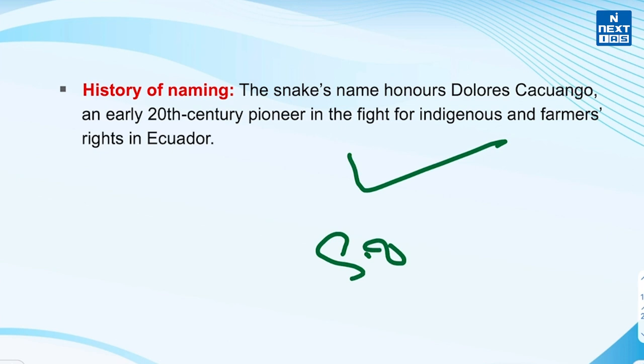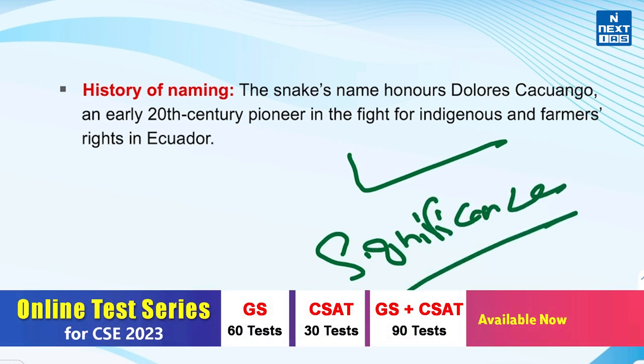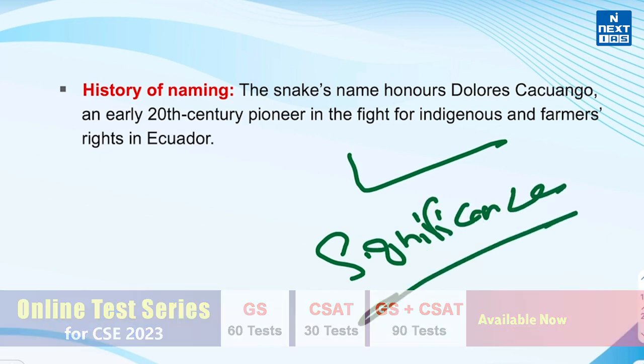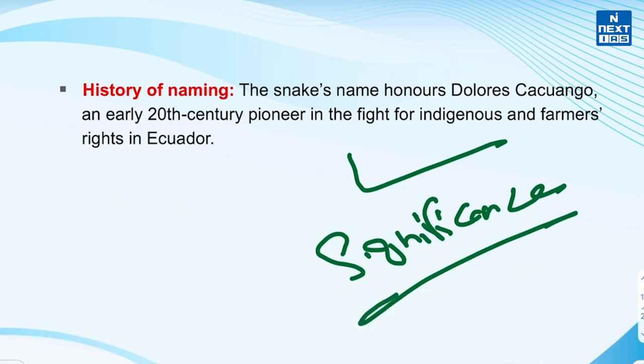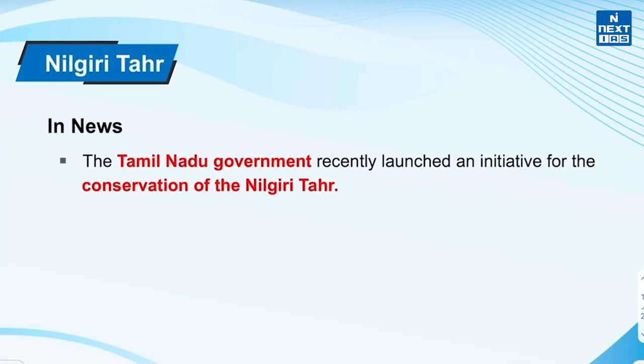What is the significance of this discovery? Its discovery demonstrates that small and cryptic vertebrate species can go undetected for large periods of time. Now let's learn about Nilgiri Tahr. Recently, the Tamil Nadu government launched an initiative for conservation of Nilgiri Tahr.